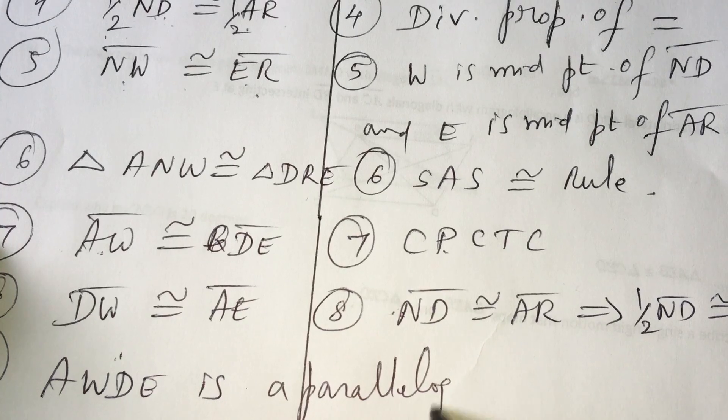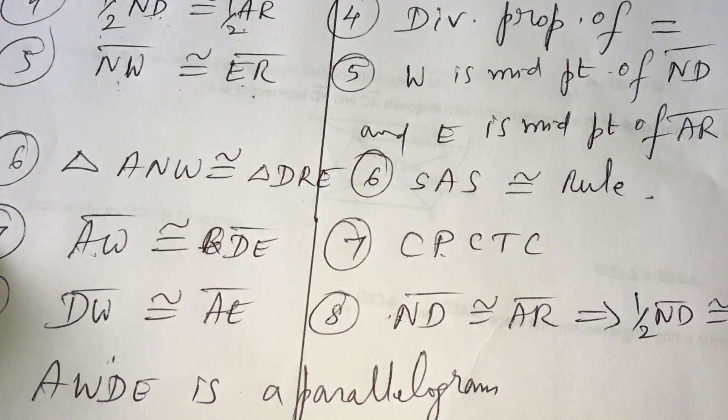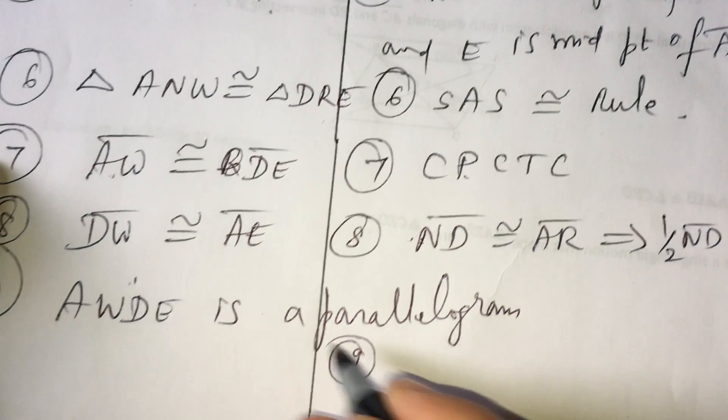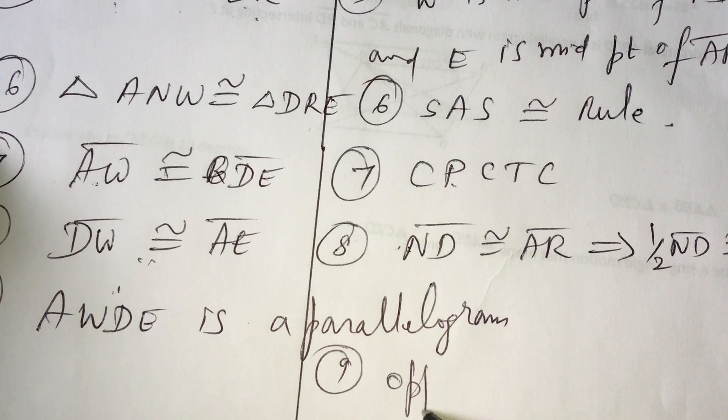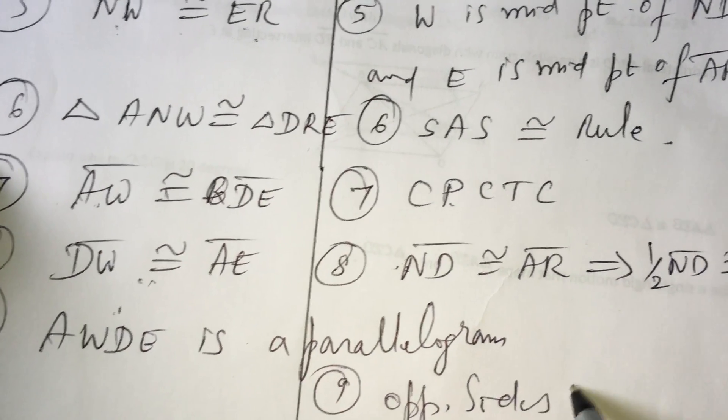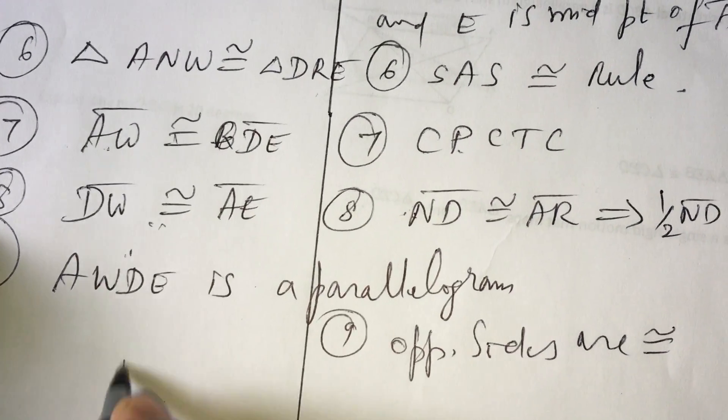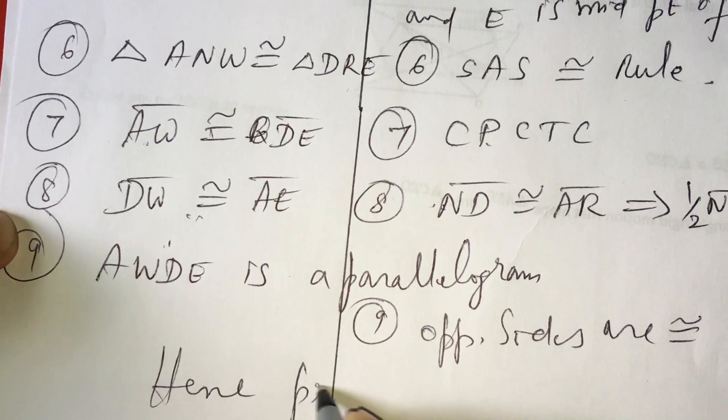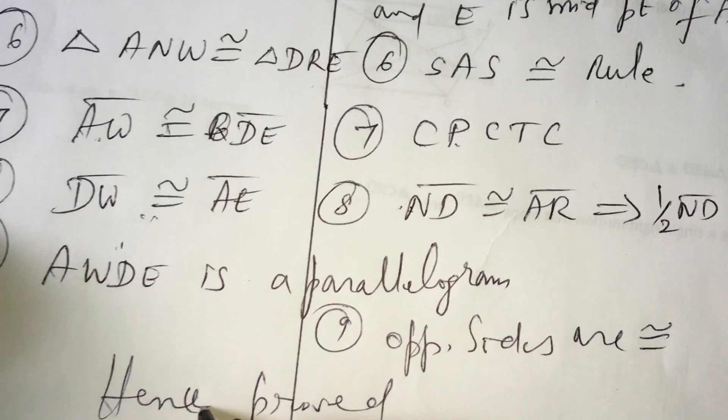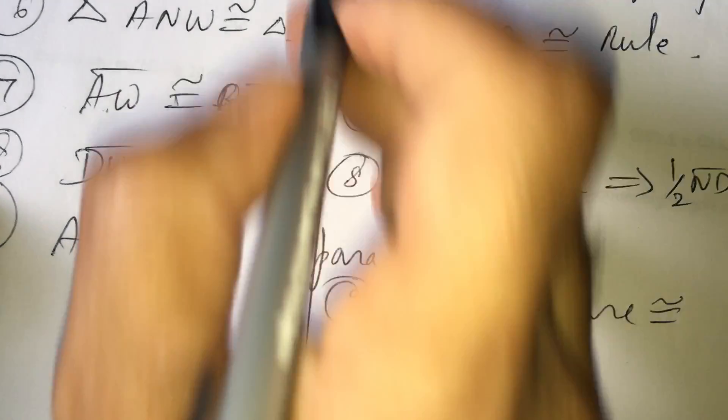Therefore, I can conclude now AWDE is a parallelogram. Why can I conclude this? Because I have shown that these two opposite sides are congruent. That's why it's a parallelogram. That is what we want. Hence proved.